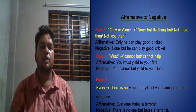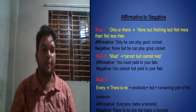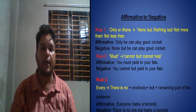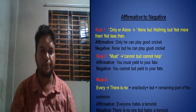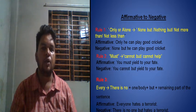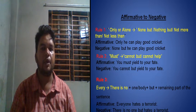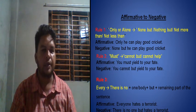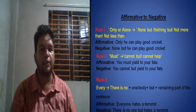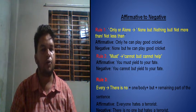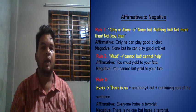Rule two: if we find 'must' in an affirmative sentence, to change it to negative we use 'cannot but' or 'cannot help'. For example: 'You must yield to your fate.' As we find 'must', we use 'cannot but'. If we use 'cannot help', remember that you have to take the continuous form of the verb — that is, add '-ing' to the verb.